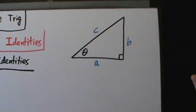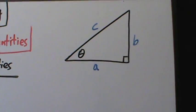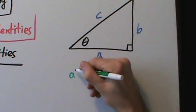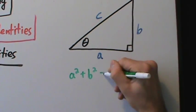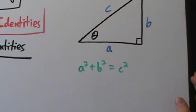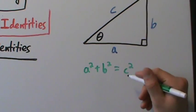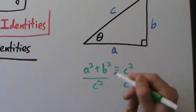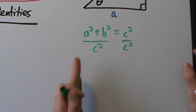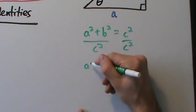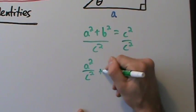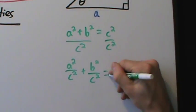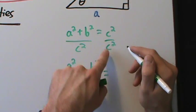Let's start with the Pythagorean theorem on this triangle. The Pythagorean theorem says a² + b² = c². Let's take this equation and divide both sides by c². We can split up the left-hand side into two fractions: a²/c² + b²/c², and on the right-hand side c²/c² is just one.